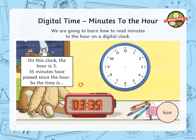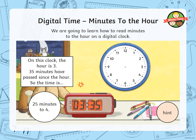On this clock, the hour is 3, and you can see that 35 minutes have gone past 3 o'clock. Think how you would write this time down — count from 35 up to 60. It's 25 minutes to 4. We'd add 5 minutes first to get to 40, and then from 40 to 60 is 20 minutes, so we would say this is 25 minutes to 4.